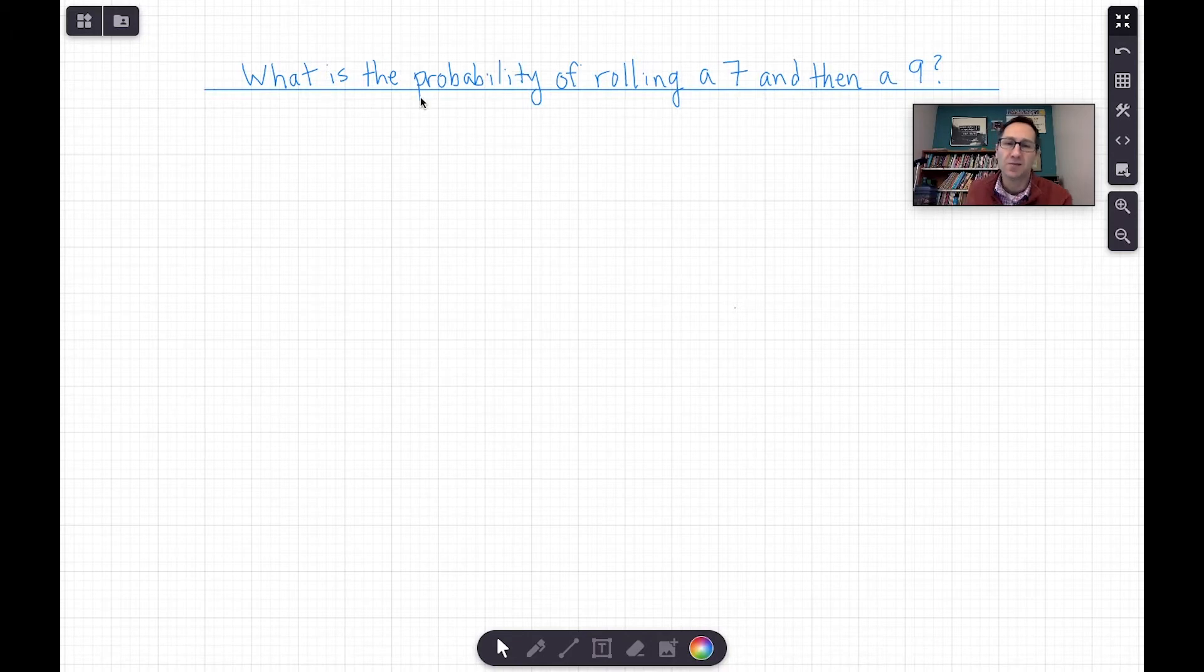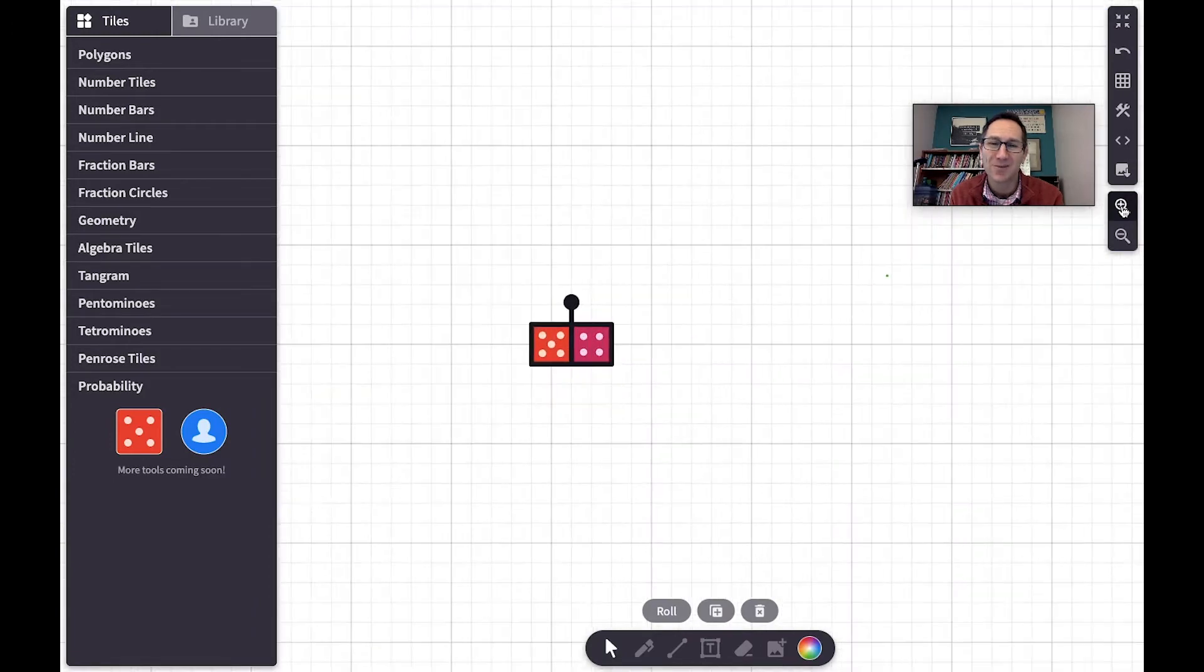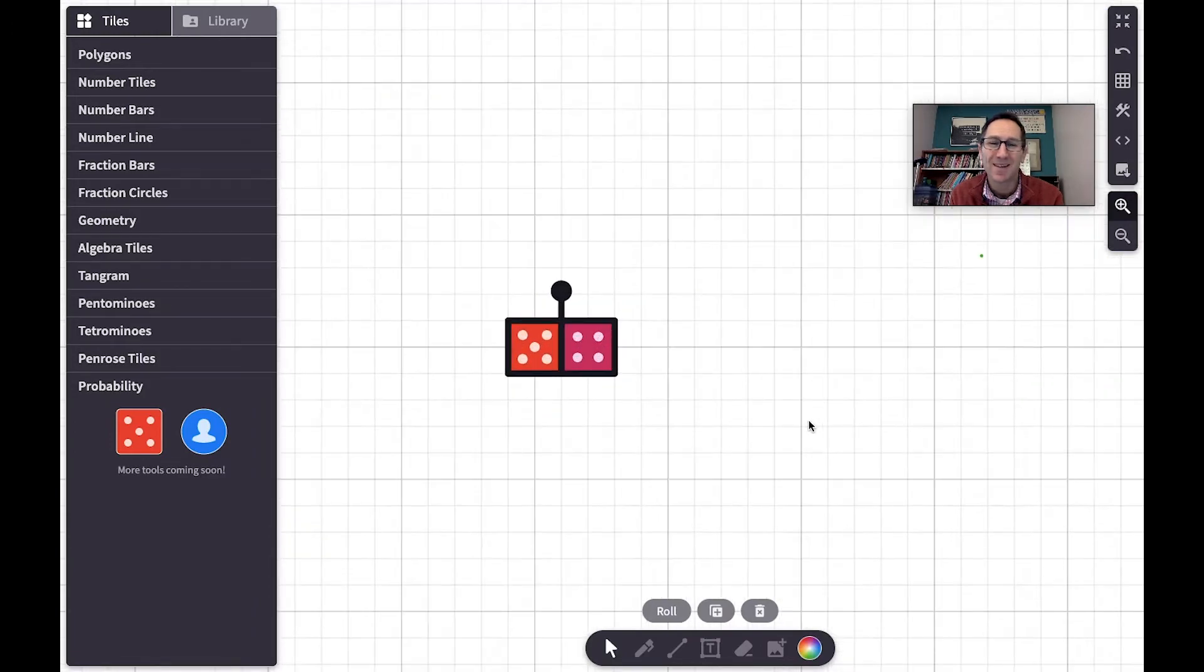So the question I have to think about is what's the probability of rolling a seven and then a nine on two dice? And so just to get students some initial ideas about this, I would have them go to Polypad and put a pair of dice on the screen and roll them and try to get a seven and a nine.